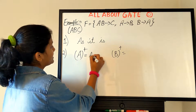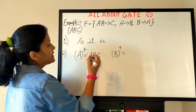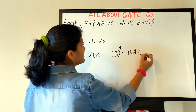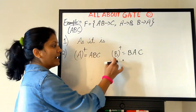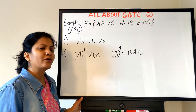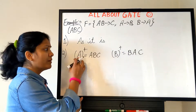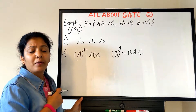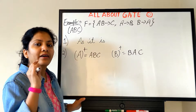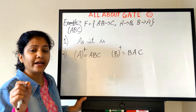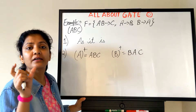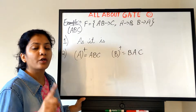A⁺ determines A, B, and C. B⁺ determines B, A, and C. A determines B and B determines A — both have the same power! None of them is weak here. This is a unique and important note: a minimal cover need not be unique. You can have multiple minimal covers from a similar functional dependency set.